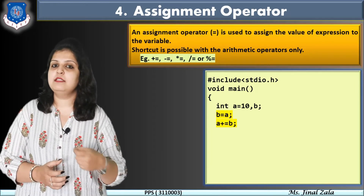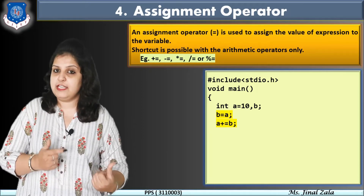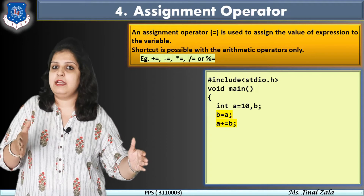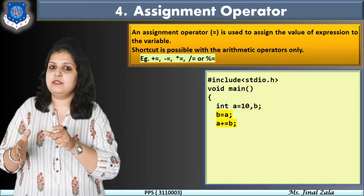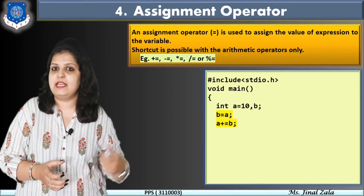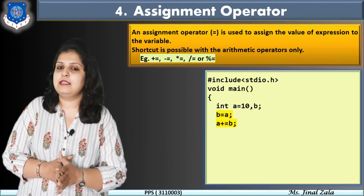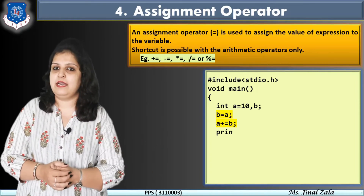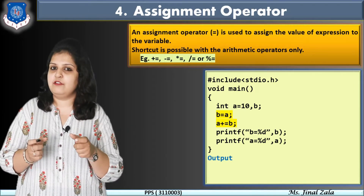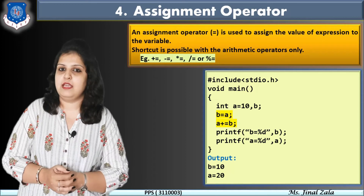Now the second operation: A += A + B. This is a shorthand operation. When expanded, it means A = A + B. This shorthand is used when the same variable appears on both sides. Since A is on both left and right, we write it once, then += B. With A = 10 and B = 10, A + B = 20, so the updated value of A becomes 20. The output will be: value of B = 10 and value of A = 20.